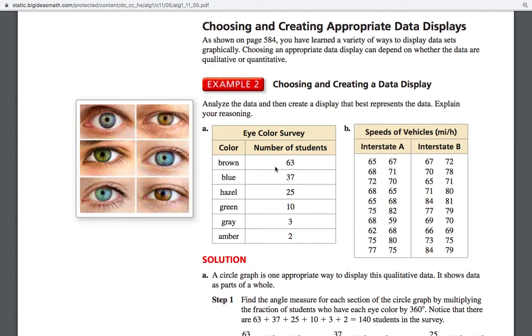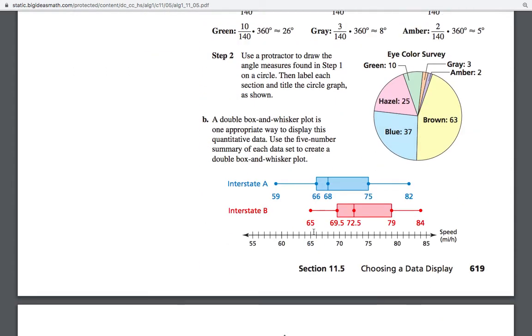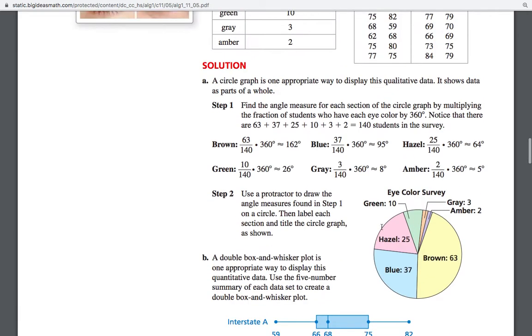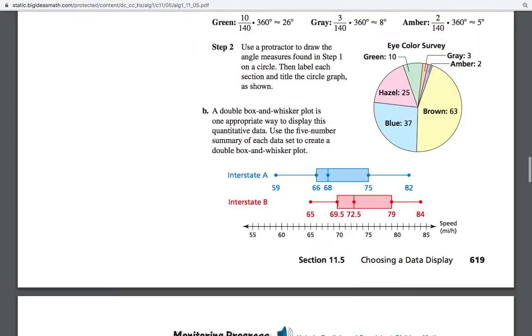So eye color survey, number of students that had each color, that would be perfect for a bar graph. Circle graph would also work for that, but I'm not sure that this is all the students, so a bar graph would work just fine for that. Speeds of vehicles. You've got two different interstates here. Yeah, they did box and whisker. It just shows the different ranges. It shows how spread out, how variable it is. That's probably going to be better than a bar graph. A histogram might work there as well. But the book decided to go with the box and whisker.